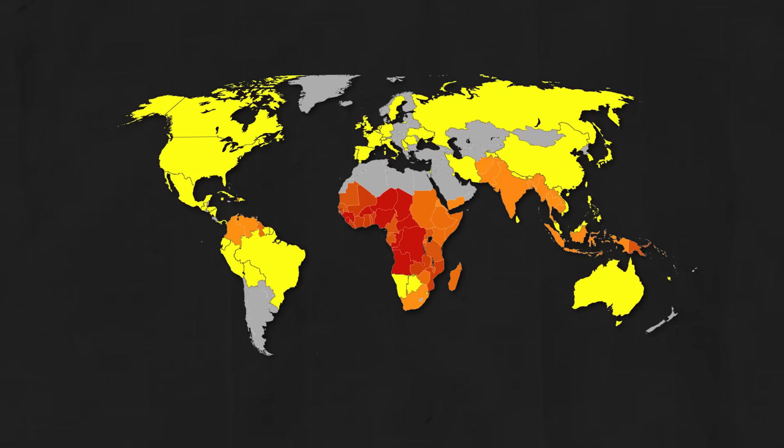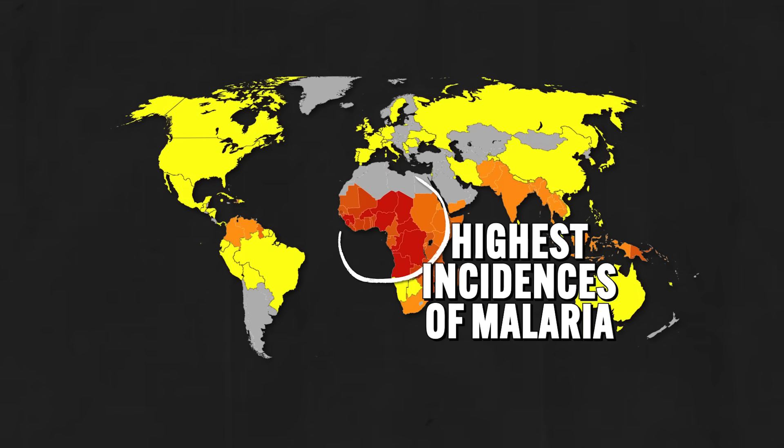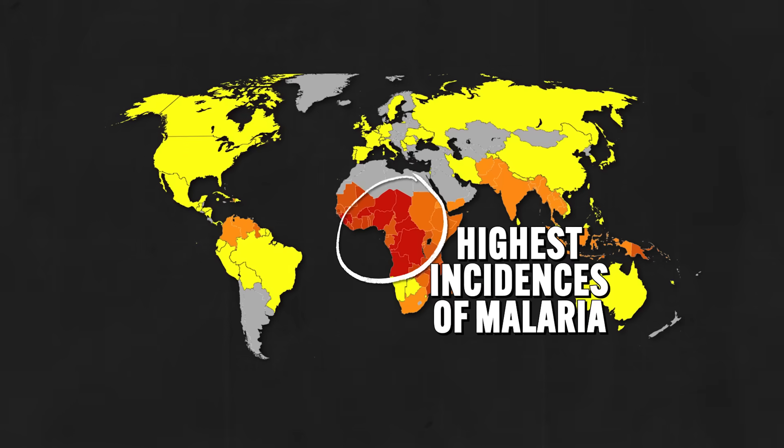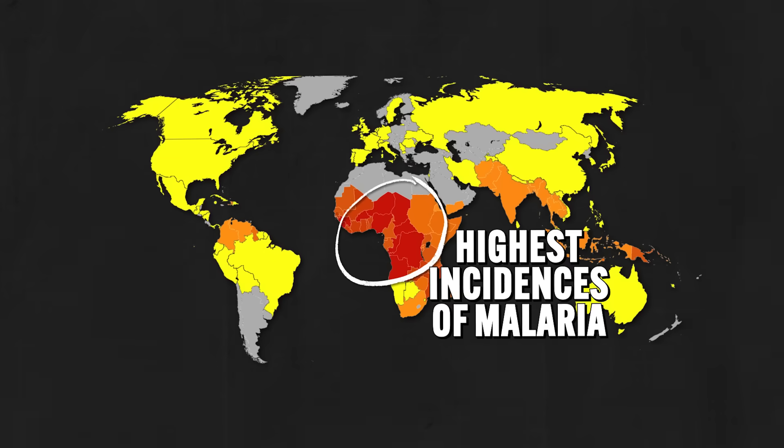Though effective medical interventions for malaria have been developed, not to mention more practical measures like mosquito nets, there are still hundreds of thousands of deaths per year in impoverished regions of the world, most notably sub-Saharan Africa.